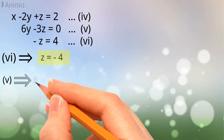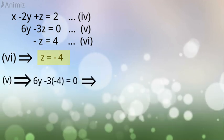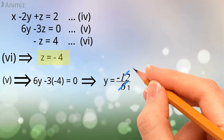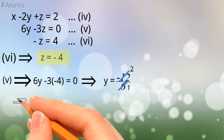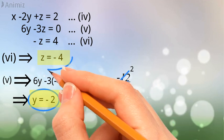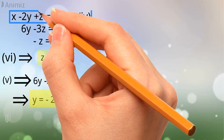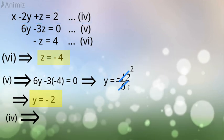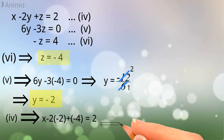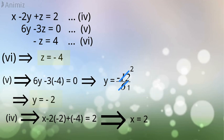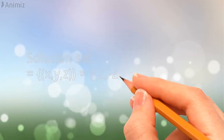That is, 6y minus 3 times negative 4 is equal to 0, which implies y is equal to negative 12 upon 6. Now let us simplify this. That is 6 once are 6 and 6 twos are 12. Thus y is equal to negative 2. Now finally substituting the value of y and z in equation 4 to get the value of x. That is, x minus 2 times negative 2 plus negative 4 is equal to 2. Solving this we get x is equal to 2.